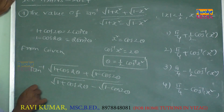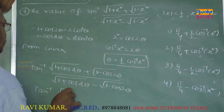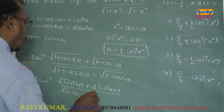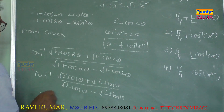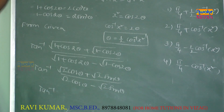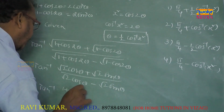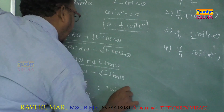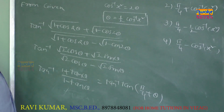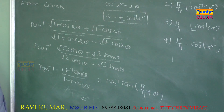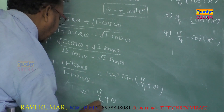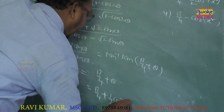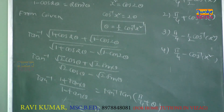The expression becomes tan⁻¹[(√2 cosθ + √2 sinθ)/(√2 cosθ - √2 sinθ)]. Dividing numerator and denominator by √2 cosθ gives (1 + tanθ)/(1 - tanθ), which equals tan(π/4 + θ). So tan⁻¹(tan(π/4 + θ)) = π/4 + θ = π/4 + (1/2)cos⁻¹(x²). The first option is the answer.